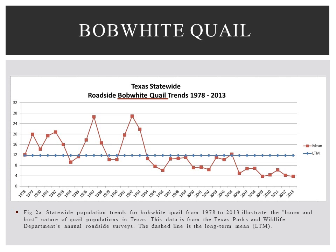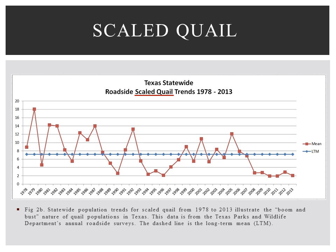Quail populations in Texas are often eruptive — that is, they have distinct boom and bust trends. Figure 2A shows the statewide roadside bobwhite quail trends, while Figure 2B shows the statewide roadside scaled quail trends. The goal of quail management should be to maximize quail abundance in good years and minimize decline in bad years. Tracking the magnitude of fluctuations can aid in management decisions.